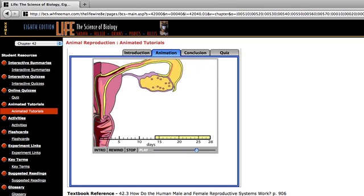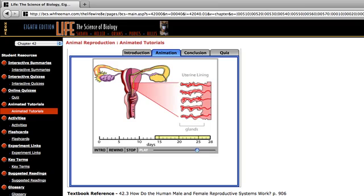Each month, the ovarian cycle is tightly coordinated with the uterine cycle. In the uterine cycle, the lining of the uterus builds up, forming elongated glands, and then sloughs off. The cycle begins with the sloughing of the uterine lining. This is the first day of menses, also called menstruation.